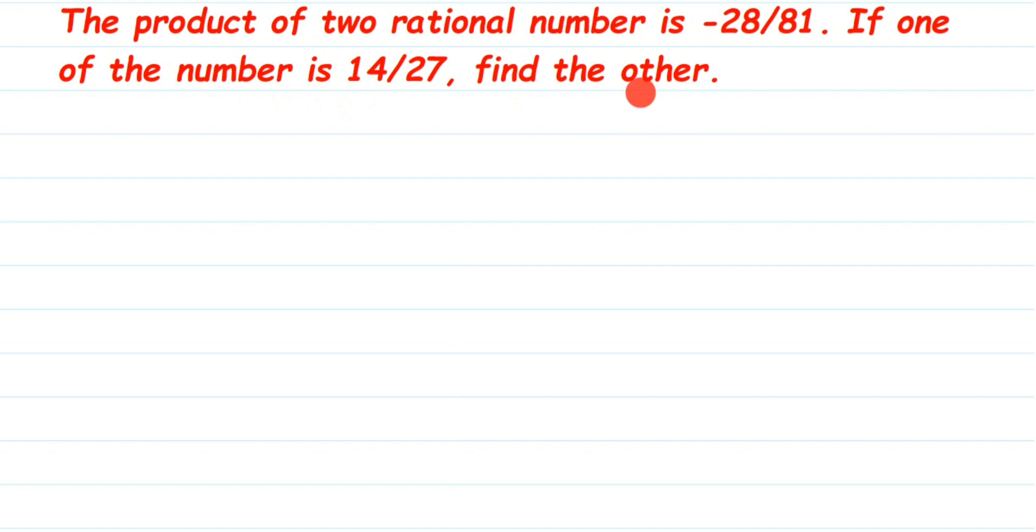So they have given that the product of two rational numbers, when you multiply two rational numbers, the answer is minus 28 by 81. If you are multiplying two rational numbers, the answer is minus 28 by 81.